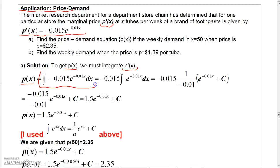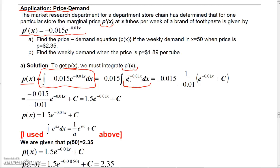Let's integrate this function to get the price function. I'm going to factor out the negative 0.015. Remember the property: the integral of e to the aX dx equals one over a times e to the aX plus a constant.